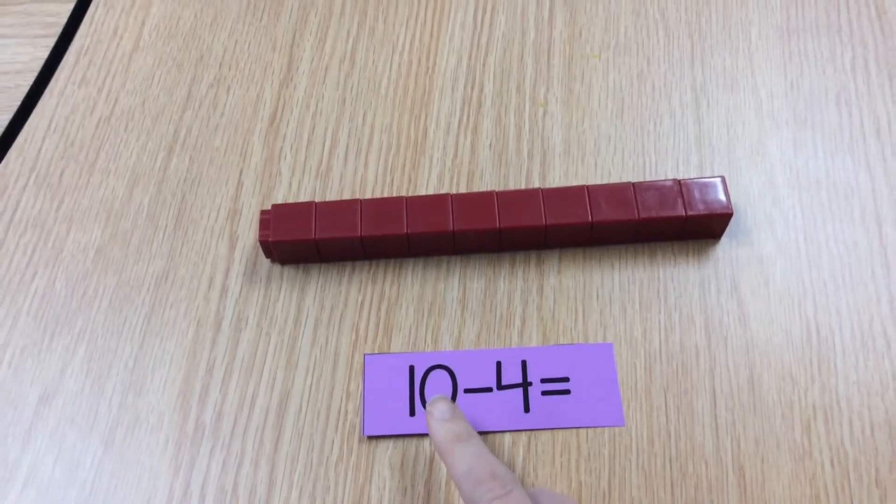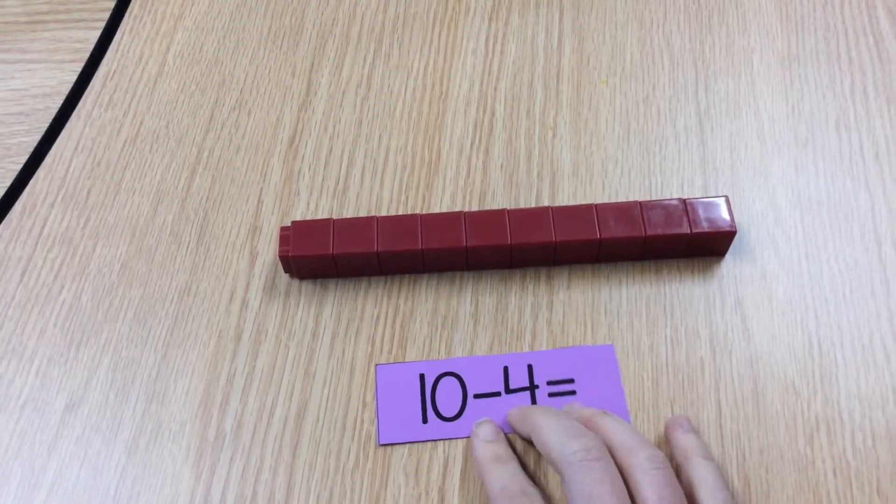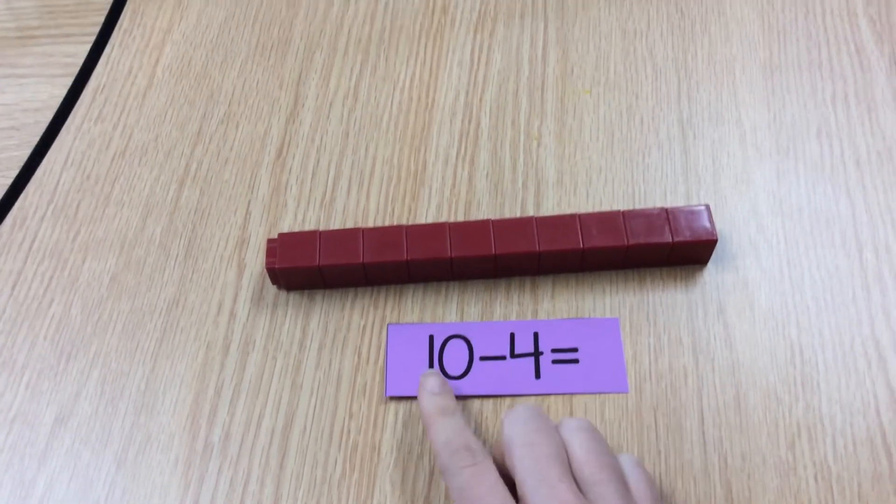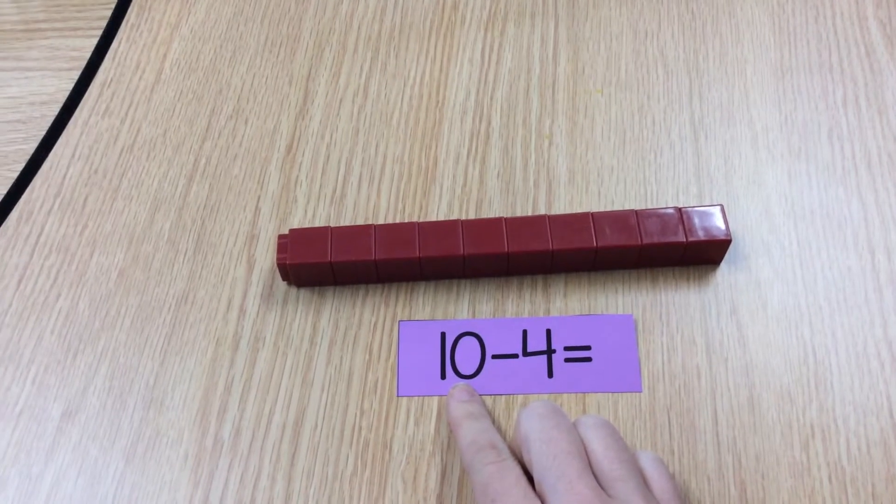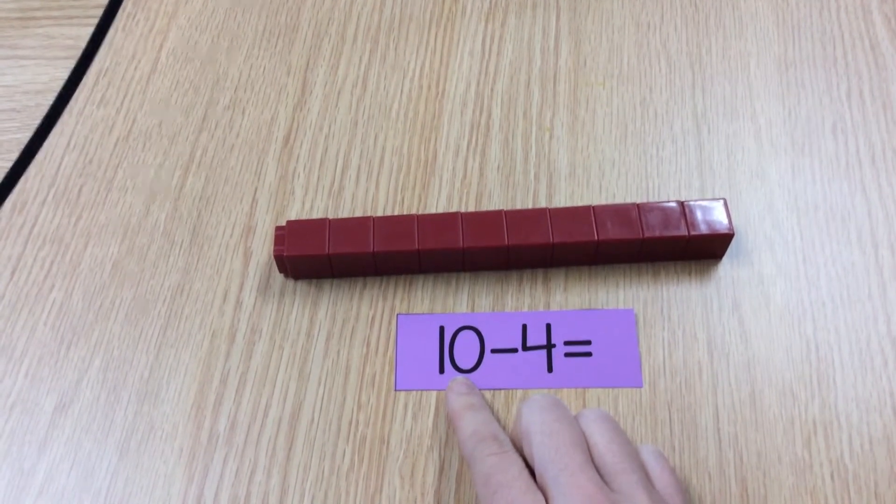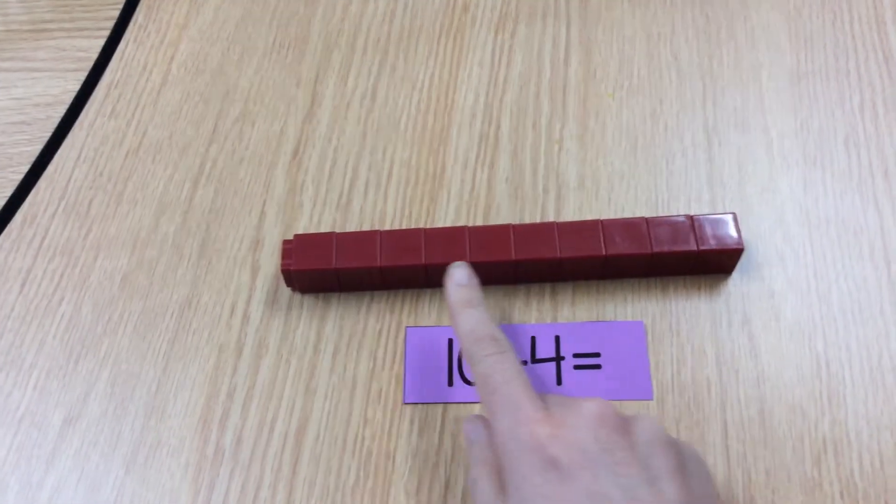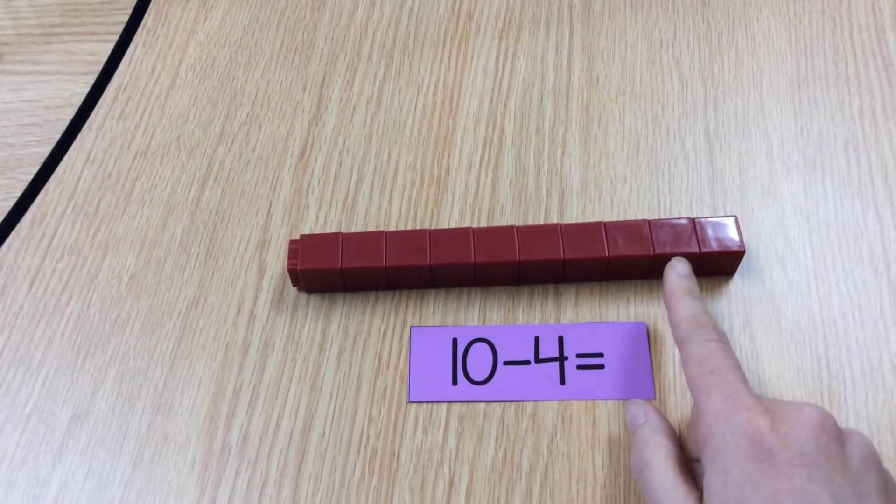So let's look at our subtraction problem today. The first number tells us how many cubes we are going to snap together. So I have snapped 10 cubes together.